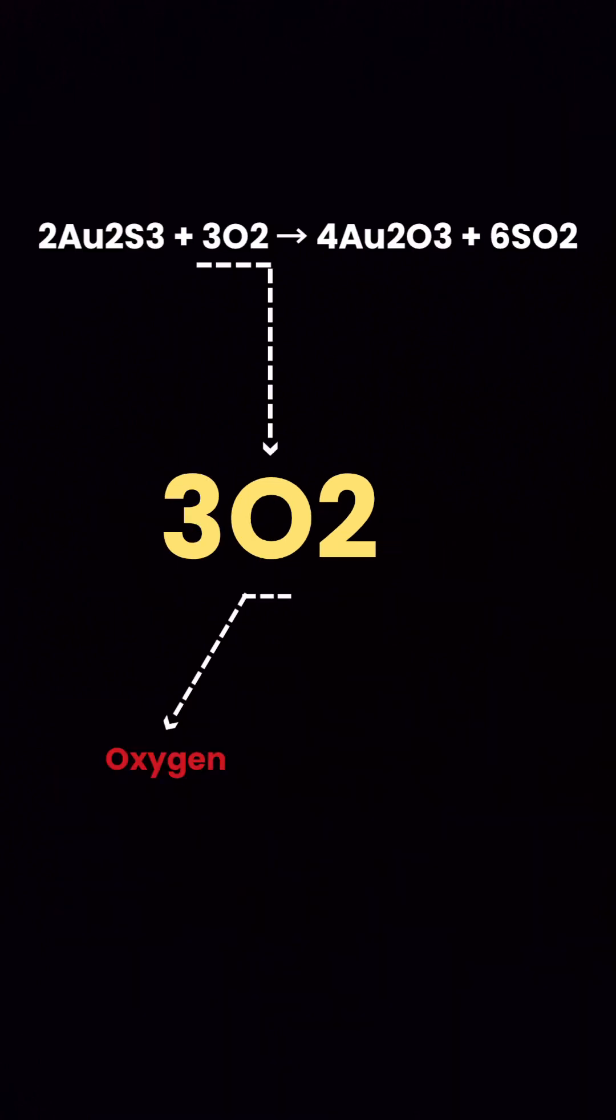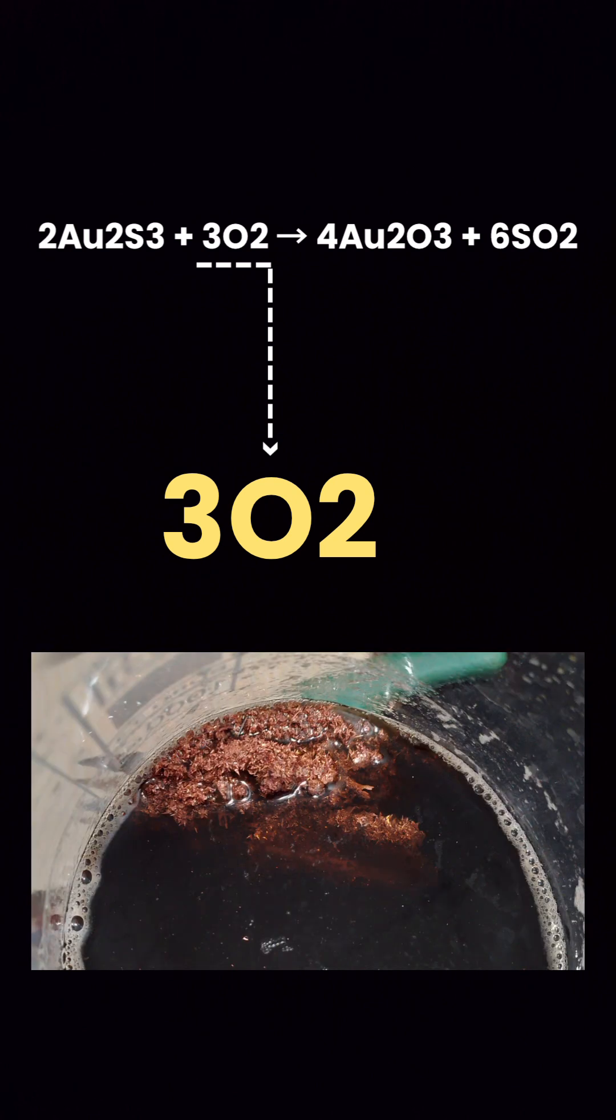Oxygen. Next comes the oxidizing agent that helps drive this process: oxygen. Oxygen, the colorless and odorless gas we breathe, is one of the most powerful molecules in nature. It is capable of breaking down different compounds and transforming them into new forms. In this reaction, oxygen combines with gold sulfide to create remarkable changes.